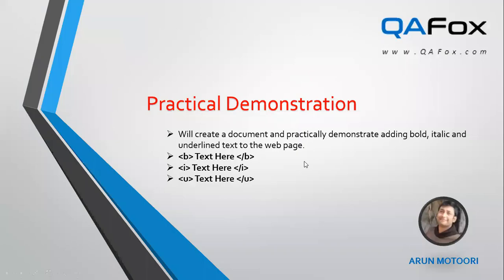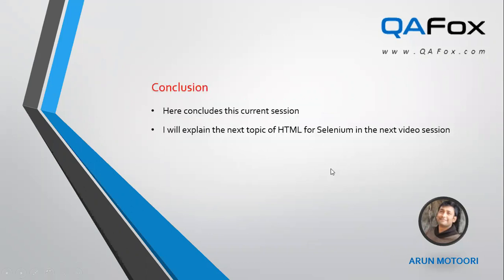In this session I have practically demonstrated how to display text in bold, italic, and underlined format on web pages using the different tags available in HTML code. This concludes the current session. In the next session I will be explaining more topics on HTML for Selenium. Thank you, see you in the next session, bye.